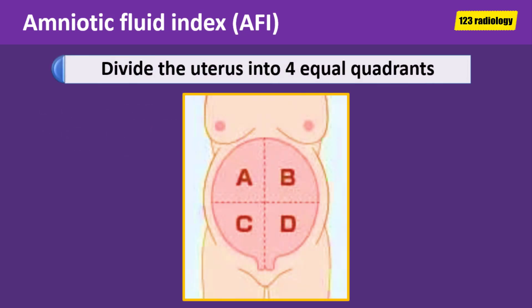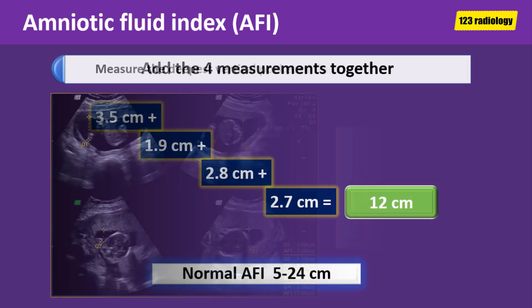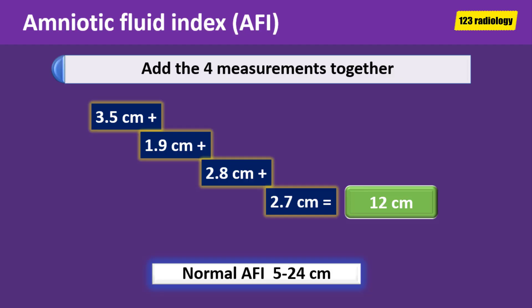The first step in measuring amniotic fluid index is to divide the uterus into 4 equal quadrants using two lines: a transverse line passing through the umbilicus and a vertical line passing through the linea nigra. Step 2: measure the deepest vertical pocket of fluid in each quadrant with the ultrasound transducer perpendicular to the floor. Amniotic fluid pockets should be free of cord and fetal parts and measurements should be in centimeters. The last step is to add the 4 measurements together — their sum is the amniotic fluid index.